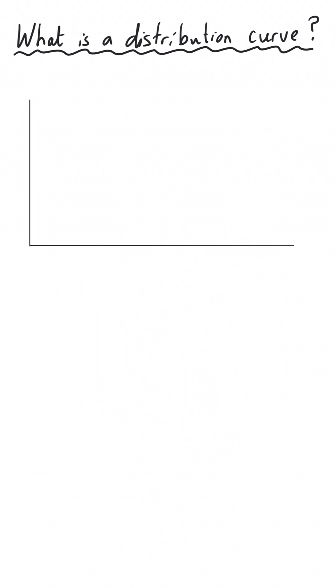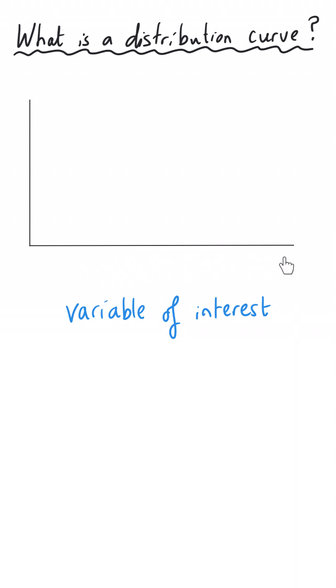Maxwell-Boltzmann curves are what's known as a distribution curve. So before we look at a Maxwell-Boltzmann curve, let's just have a look at what a distribution curve is. Distribution curves always have the same setup — they always have the thing that you're interested in on the x-axis, and then a number of things on the y-axis.